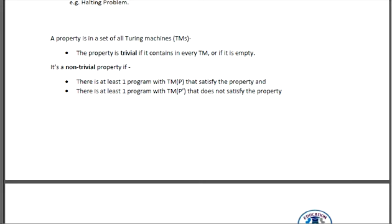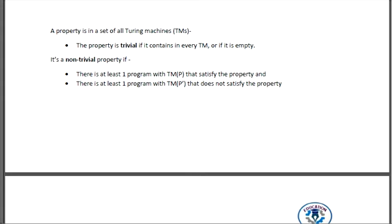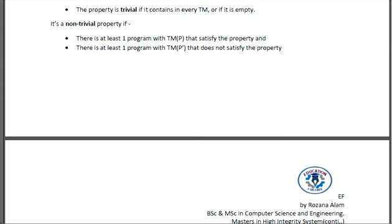Now, if it is non-trivial, then there might be at least one program with the Turing machine of program P that satisfies the property, and there is at least one program P with the Turing machine TP' that does not satisfy the property. So that means your trivial or non-trivial property.